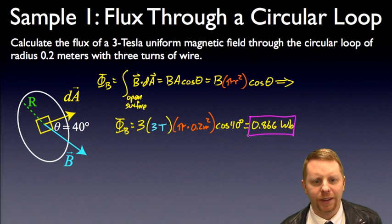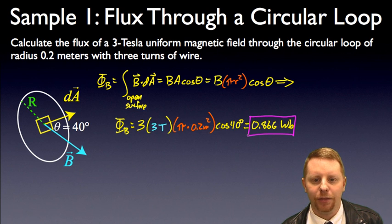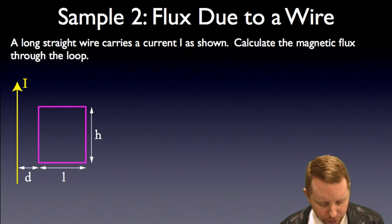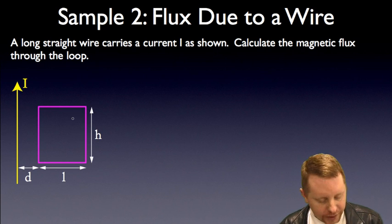Pretty straightforward. The big trick there is with three turns of wire, you have to multiply your total flux by three. Let's take a look at another sample here, where we have a long straight wire carrying a current I as shown. Find the magnetic flux through this rectangular loop.